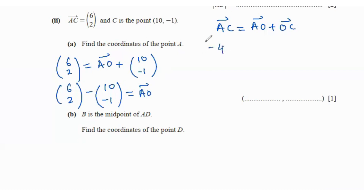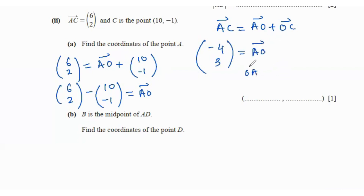So AO is (6, 2) minus (10, -1), which gives us (-4, 3). But we need OA, not AO. OA is the opposite, so we change the signs: OA = (4, -3). That gives us the coordinates of A as (4, -3).